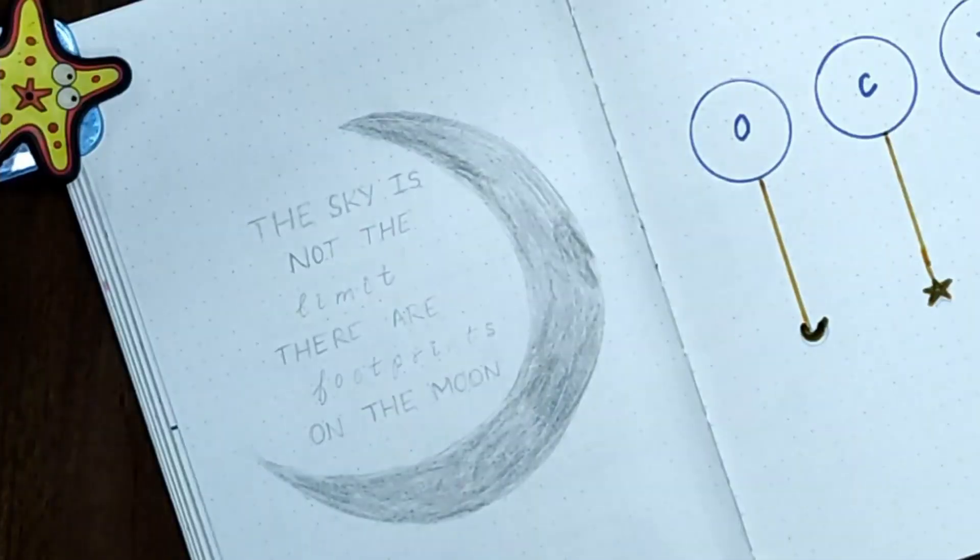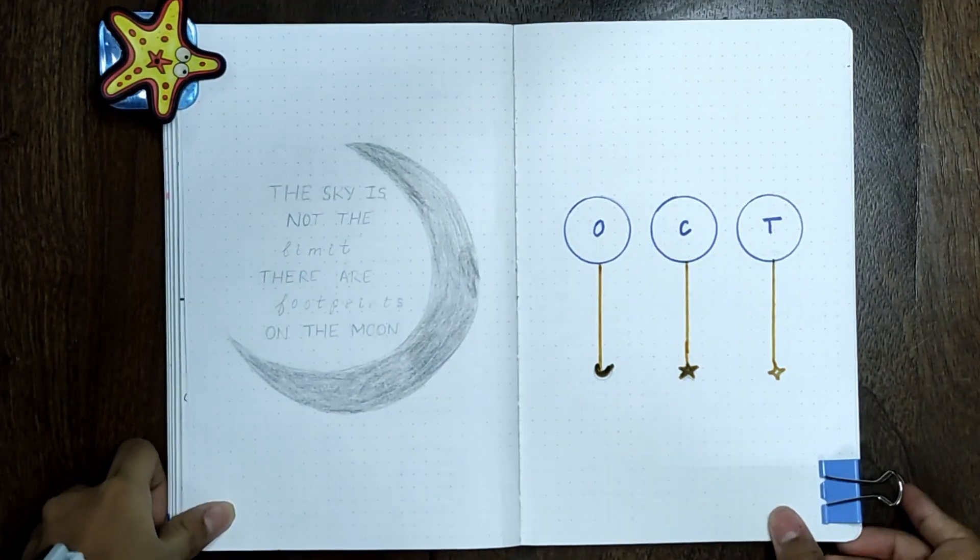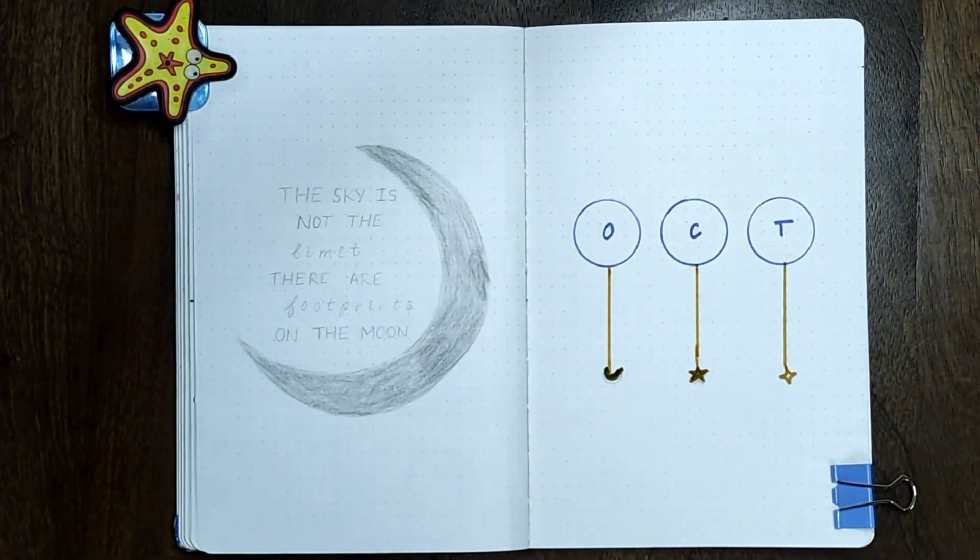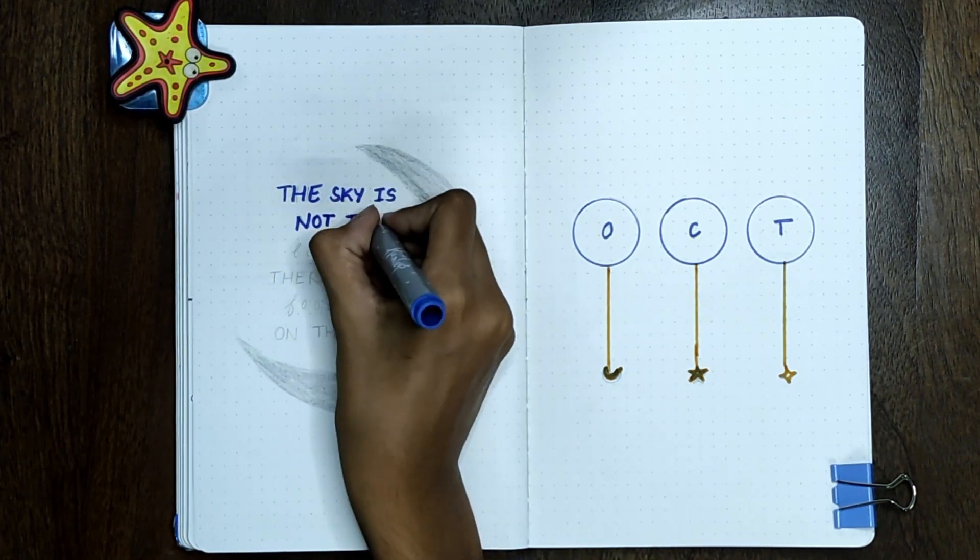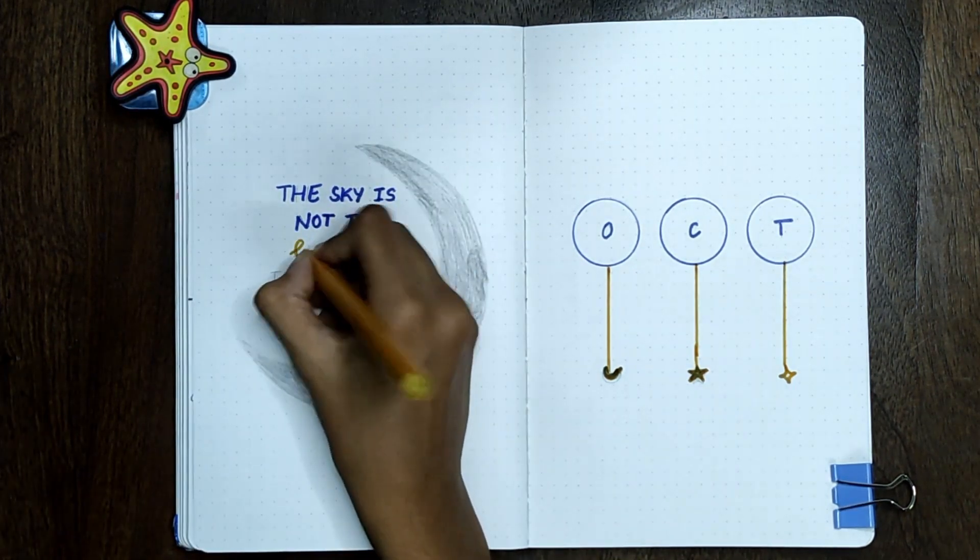On the left for my cover page, I drew a crescent moon, and then in the space next to the moon I've written a quote: 'The sky is not the limit; there are footprints on the moon.'